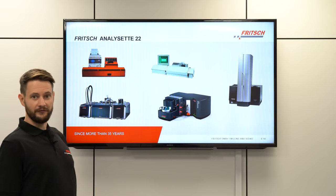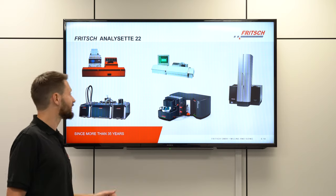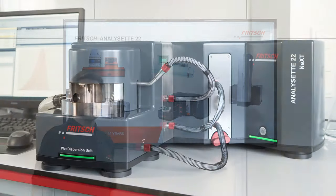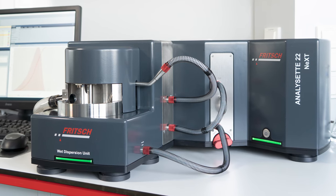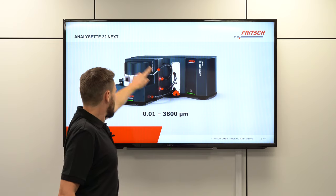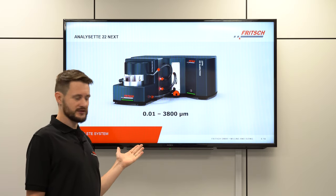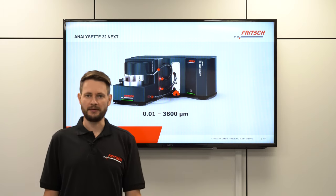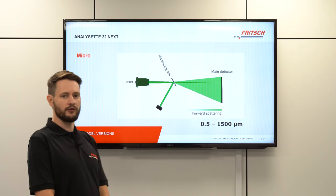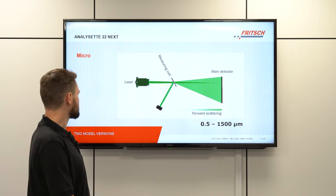Here we see a gallery of the last 35 years of Fritsch laser particle sizers. The first instruments look quite different from today's models, and importantly this is not shown to scale — the newest instrument is by far the most compact one. Looking more closely, you can see the wet dispersion unit in front and the separate ultrasonic box at the back. The full system has a measuring range of 10 nanometers to 3.8 millimeters, while a more basic version offers a range of 500 nanometers to 1.5 millimeters.